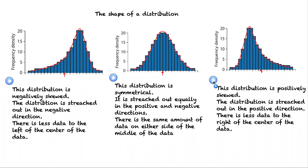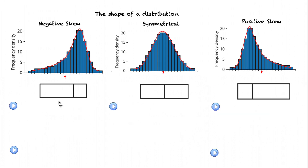Let's take a look at this last one. This distribution is positively skewed. The distribution is stretched out in that positive direction. And if I take this as the centre of this scale, there's less data to the right of that centre mark.